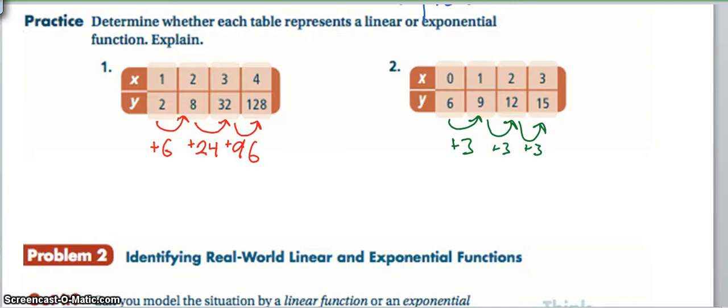Alright, so let's look at these. What we see in number 1 is that my change in y is 6, and then it's 24, and then it's 96. This is definitely not linear. We can go ahead and call that exponential. We're going to come back to that in just a moment. Over here, number 2, we add 3, we add 3, we add 3. So this is in fact linear.